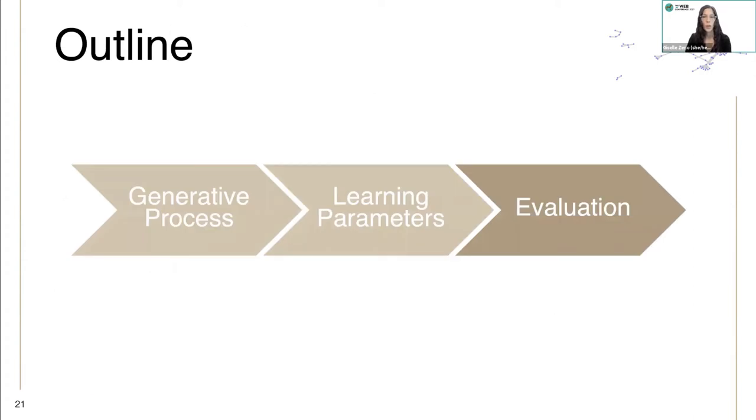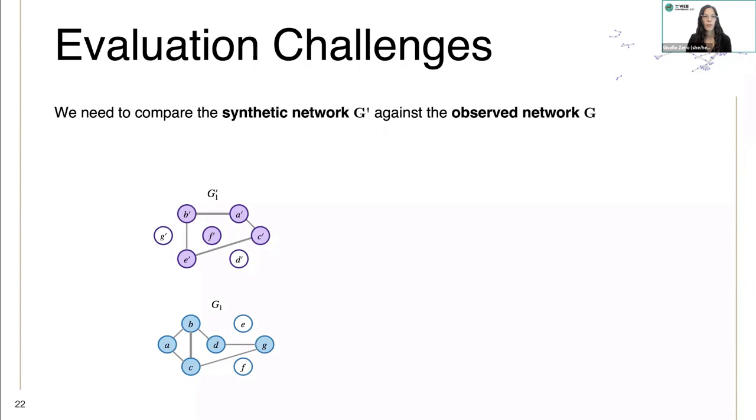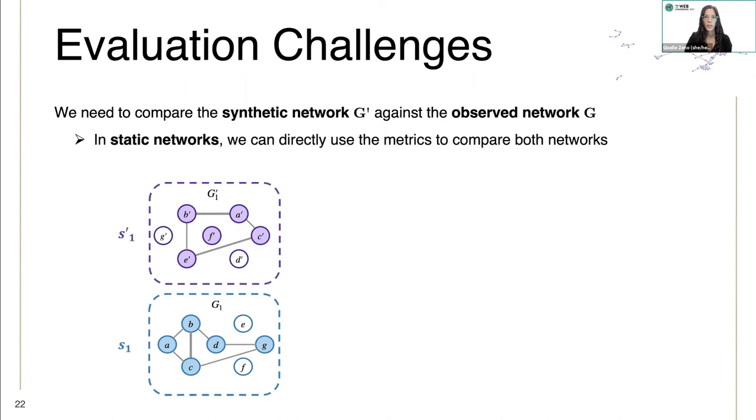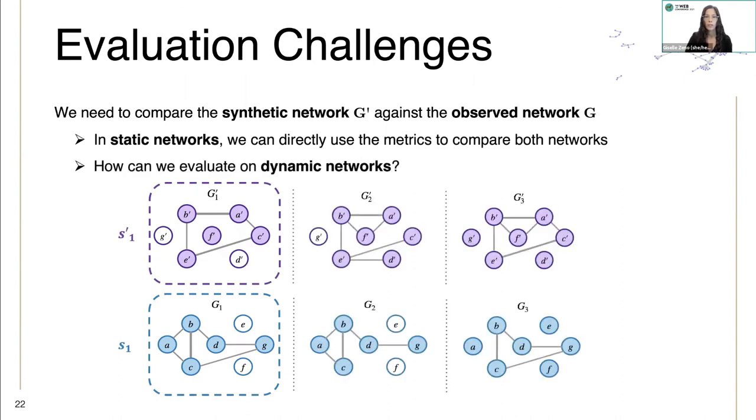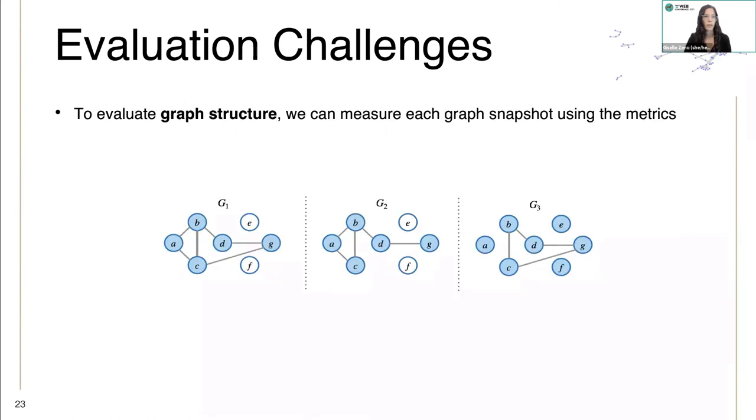Now, in our evaluation, we need to compare the synthetic network against the observed network. In this example, G prime is the one with the active nodes in purple, and the observed network G is the one with the blue active nodes. In static networks, we can directly use the metrics to compare both networks. But how can we evaluate on dynamic networks?